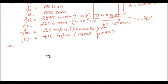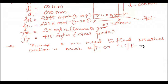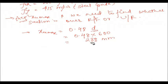The first step in solving this problem is to calculate xu_max, and then determine whether the section is over-reinforced or under-reinforced. For Fe415, xu_max = 0.48 × d = 0.48 × 600 mm = 288 mm.